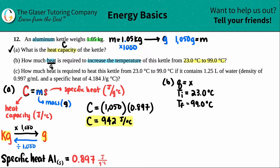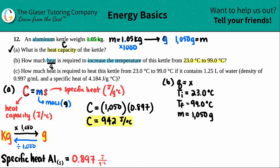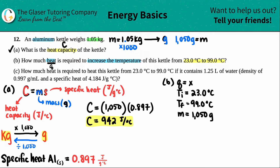We can use information from Part A — the aluminum kettle had a mass of 1,050 grams, and we have the specific heat. The formula that relates Q with mass, temperature, and specific heat is Q equals M times s times delta T. The s you might know as C for specific heat, but I'll use s here.